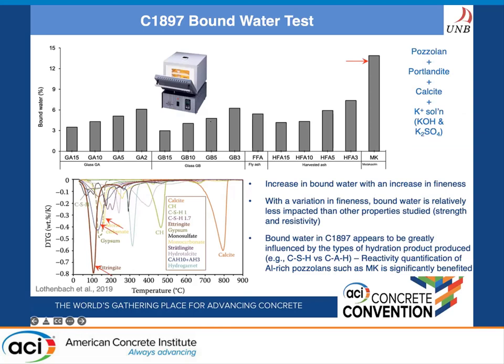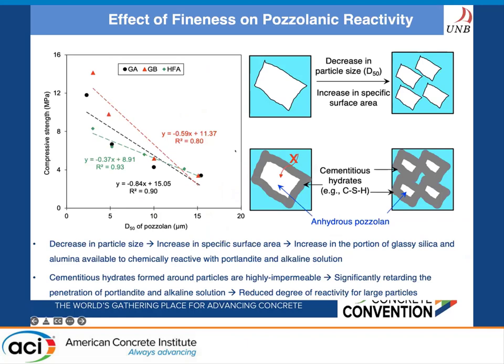The final test conducted was the newly developed ASTM C1919-7 bound water test. In this test, the bound water content of materials increases as their particle size decreases; however, the values are still lower than that of metakaolin. From the reactivity results, we can see that reactivity increases as we decrease the particle size, and there is a clear correlation.